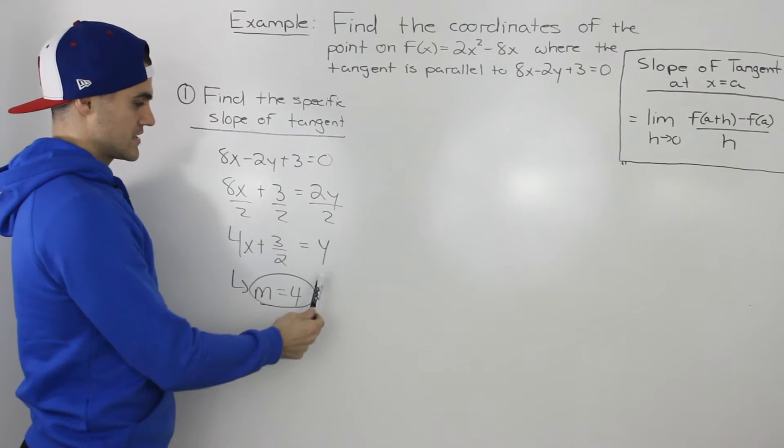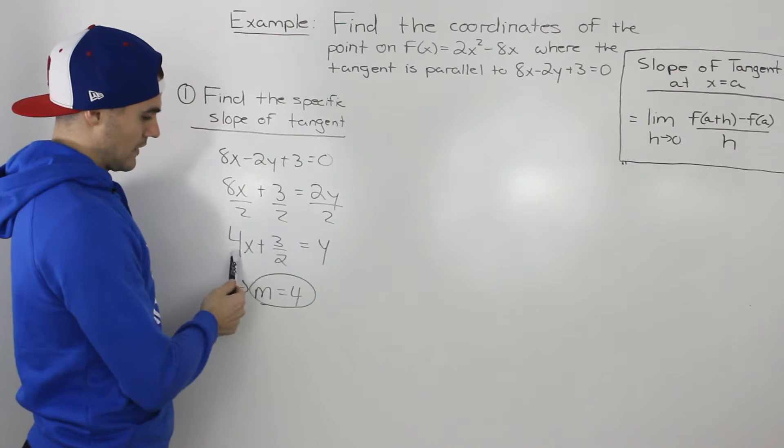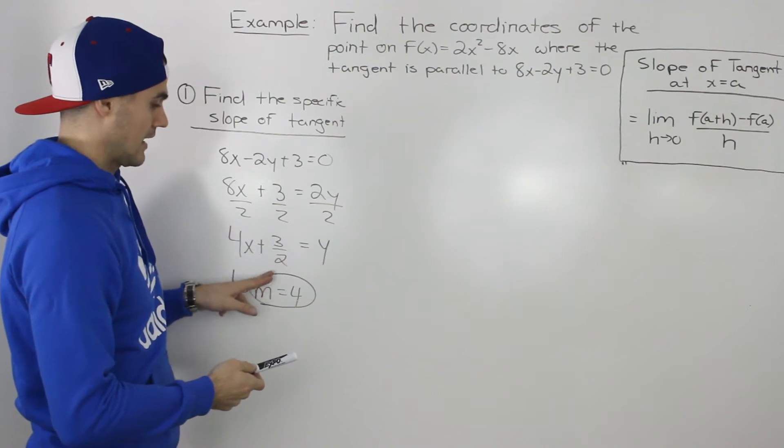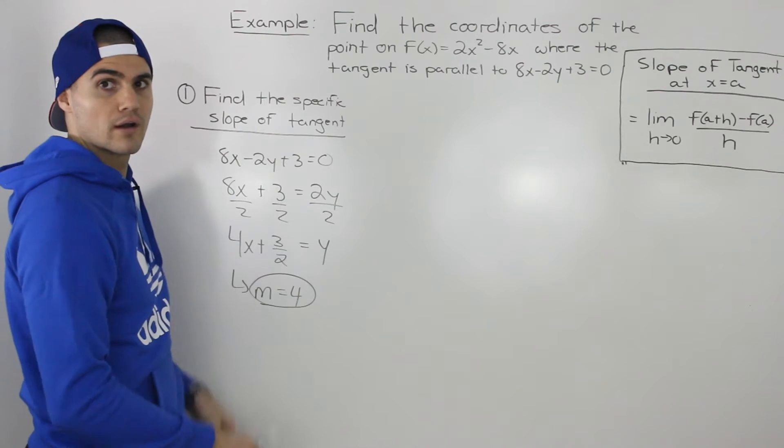And notice how this is in y = mx + b form, where the m value is 4. So we know that the slope of the tangent, because it's parallel to this line, has a slope of 4 as well.